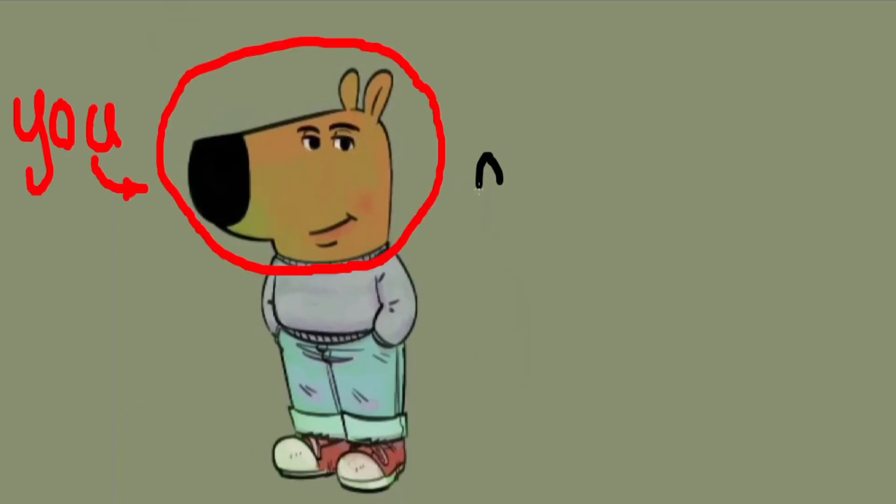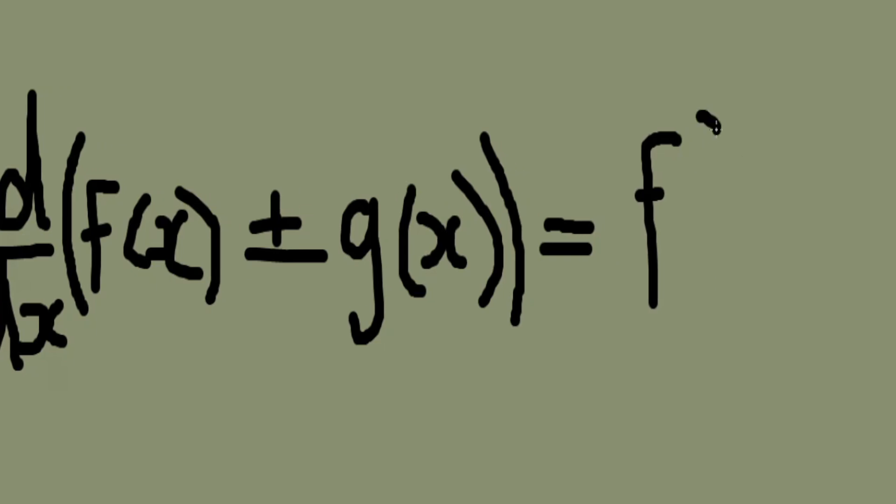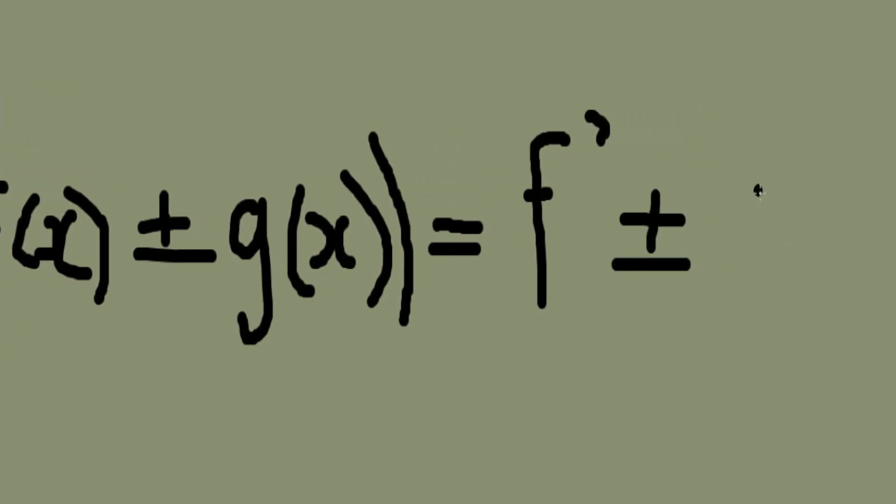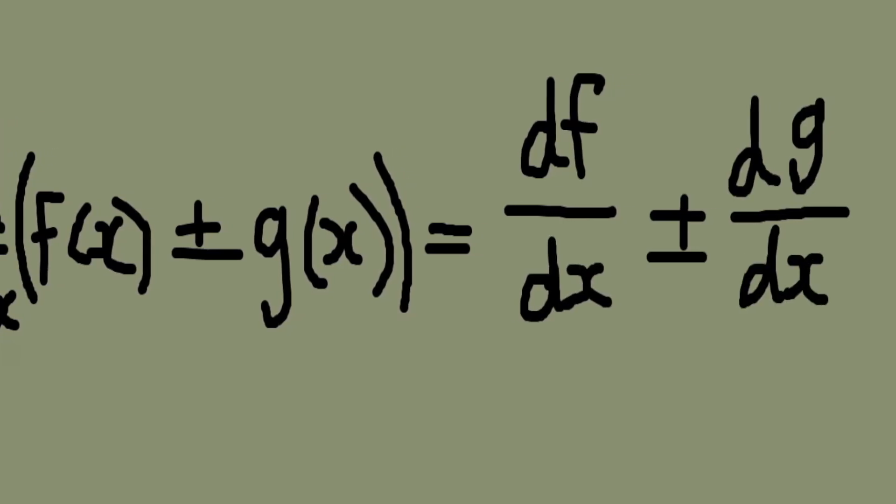Let's say that you're the chill guy, and you want to take the derivative of two functions added or subtracted from each other. Well in prime notation, we see that it is equal to the derivative of the first function added or subtracted by the derivative of the second. That's pretty lit. For fractions, we write the function on the top and the variable at the bottom, sigma.